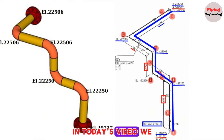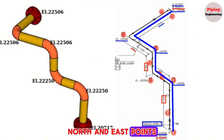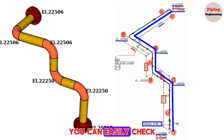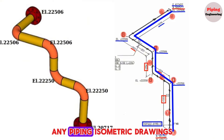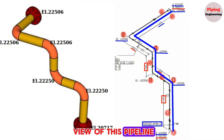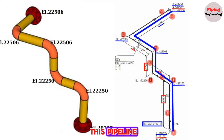In today's video, we learned what the elevation, north, and east coordinates shown in the pipe drawings mean. By using this method, you can easily check elevations in any piping isometric drawing. By watching the 3D view of this pipeline, it will be easier to read and understand the isometric drawing.